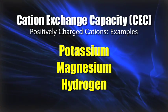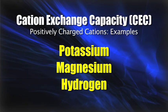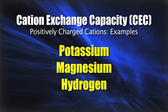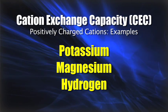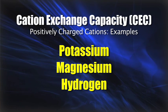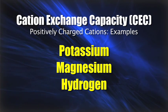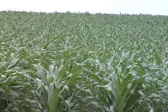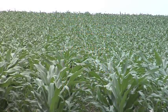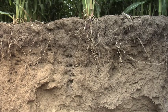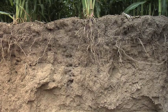Cations are positively charged nutrients like potassium, magnesium, or hydrogen. These are the types of nutrients that are going to attract to your soil particles and be held there. Most importantly for crop farmers, they're held there waiting for your crop's roots to go down and extract those nutrients to feed the plant.